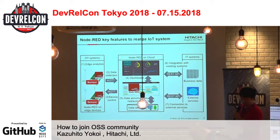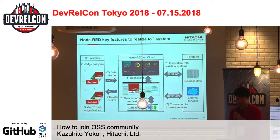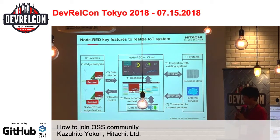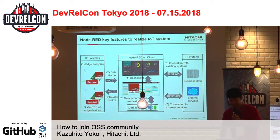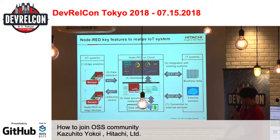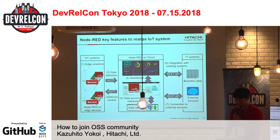And fourth is dashboard. Using the dashboard, Node-RED can visualize sensor data on your browser. And fifth is connection to data lake. Node-RED supports a lot of major databases like MySQL, PostgreSQL, and MongoDB. And the last one is connection to other systems. If other systems have a REST API, Node-RED can connect to that system.